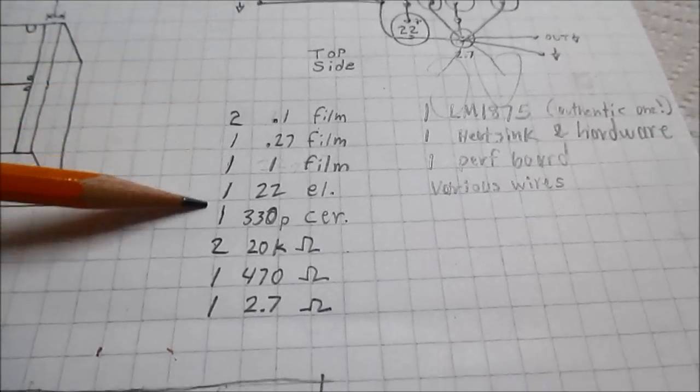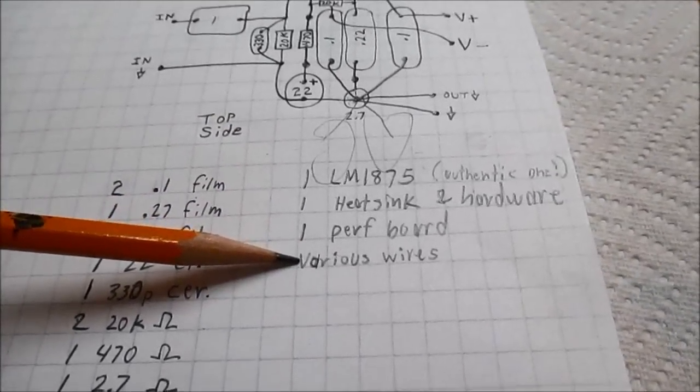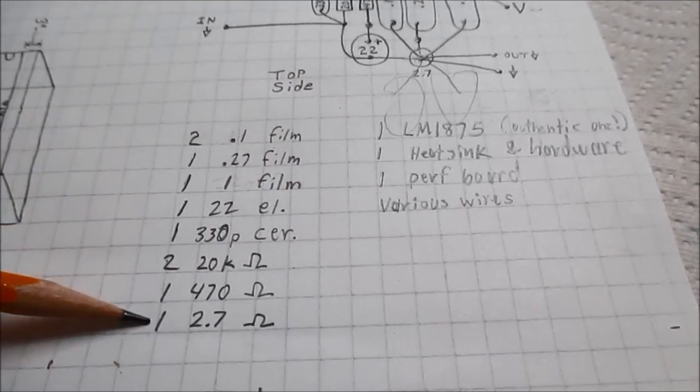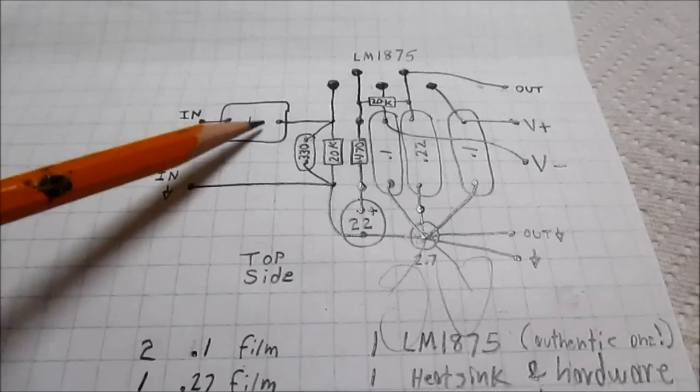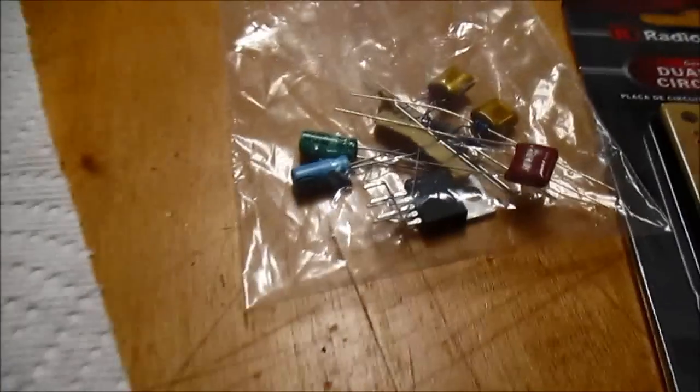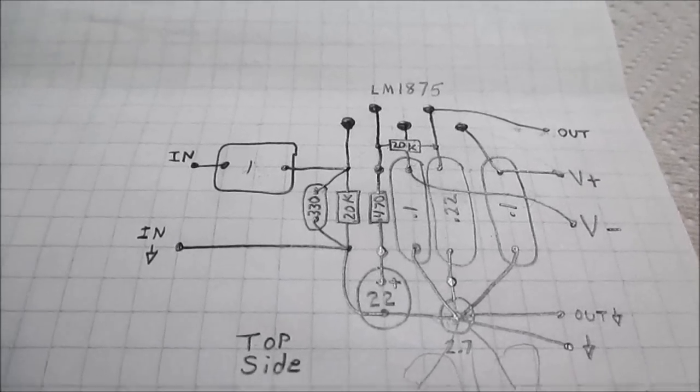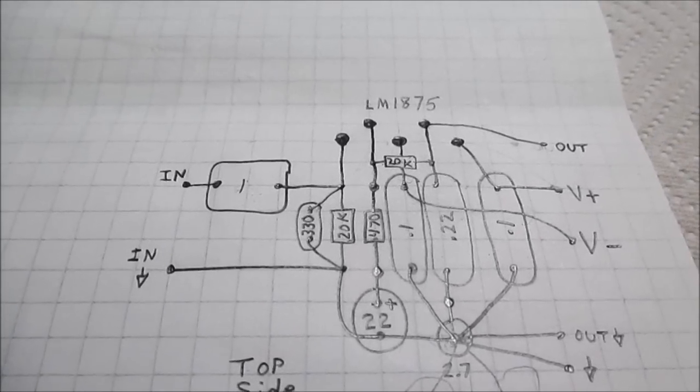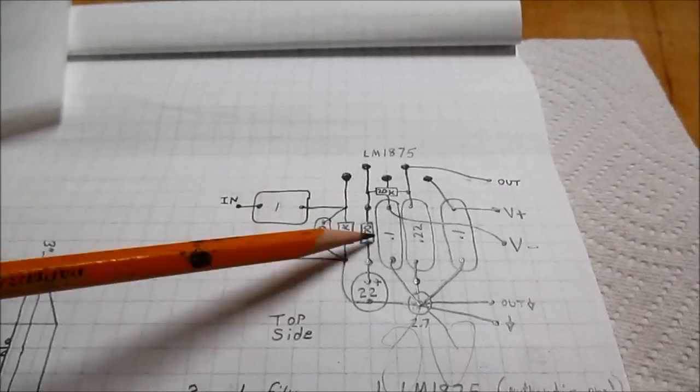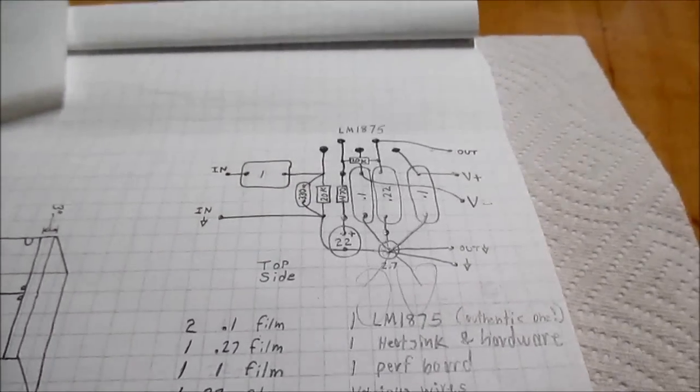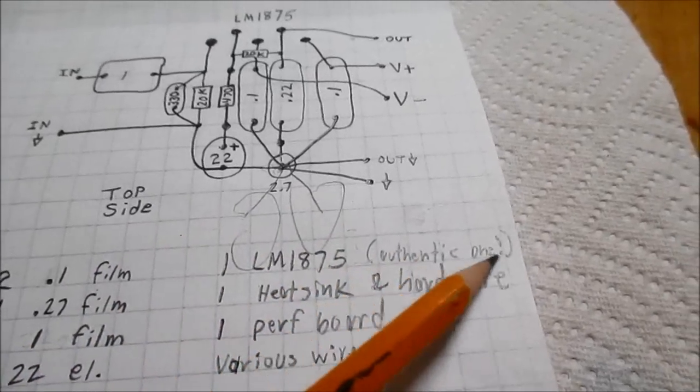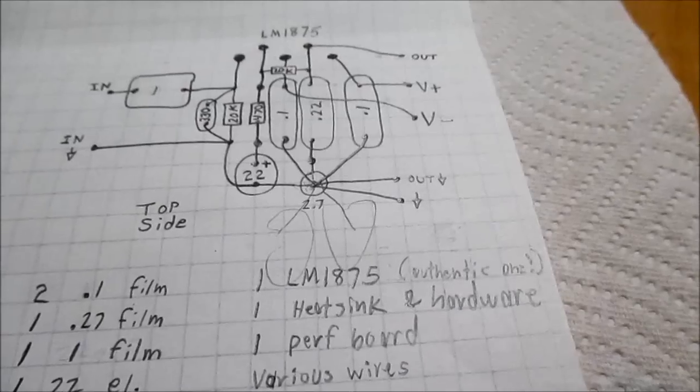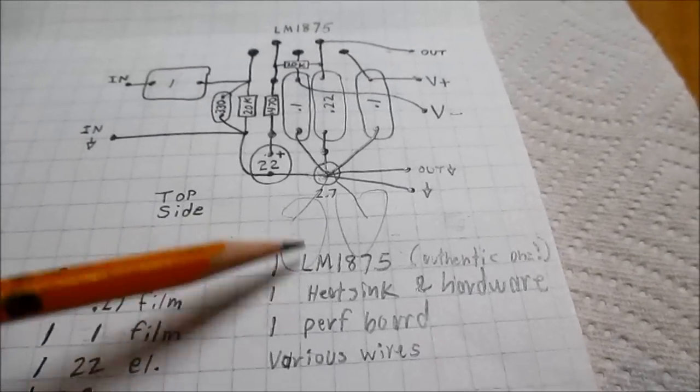This is the bill of material here. I think I have everything. In mine, instead of using a film capacitor on the input, I'm just going to use electrolytic. This is not going to be a serious listening amplifier or anything like that. And, it's a pretty good layout. You should get the most of the 1875. Make sure you get an authentic one, not the crap off of eBay. Get it from Mouser or Digi-Key, whatever.